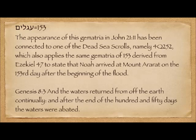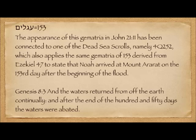There are people who believe this is a prophecy of the Dead Sea. In the past ten years, news items have occasionally appeared that there are fish in the Dead Sea — actually, freshwater pools forming around the Dead Sea with fish in them. The appearance of this gematria in John 21:11 has been connected to Dead Sea Scroll 4Q252, which also applies the gematria of 153, derived from Ezekiel 47, to state that Noah arrived at Mount Ararat on the 153rd day after the beginning of the flood.